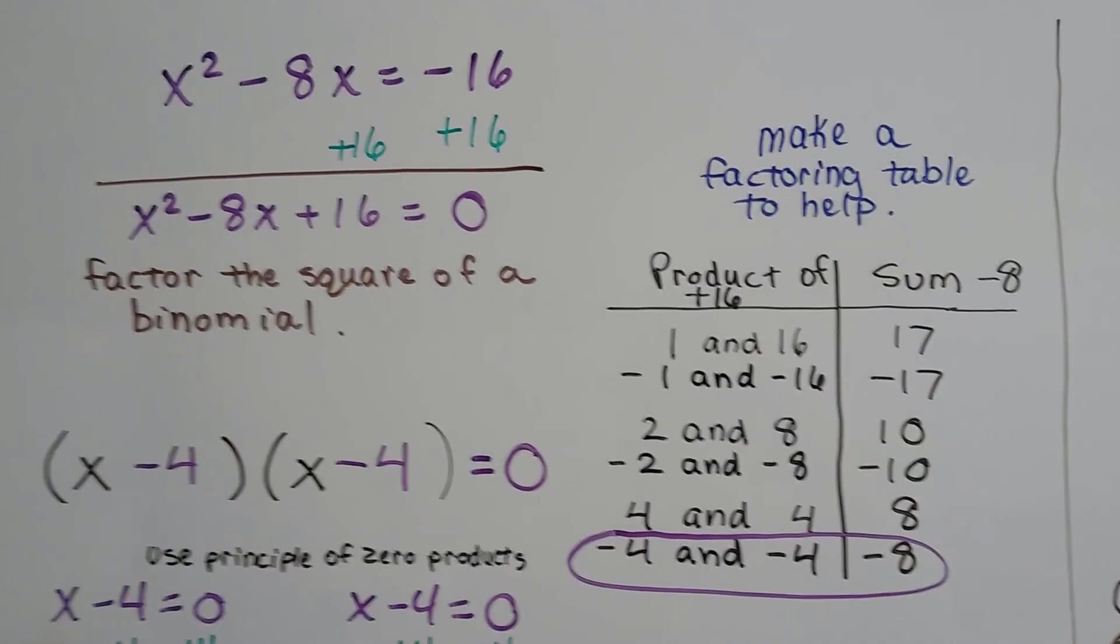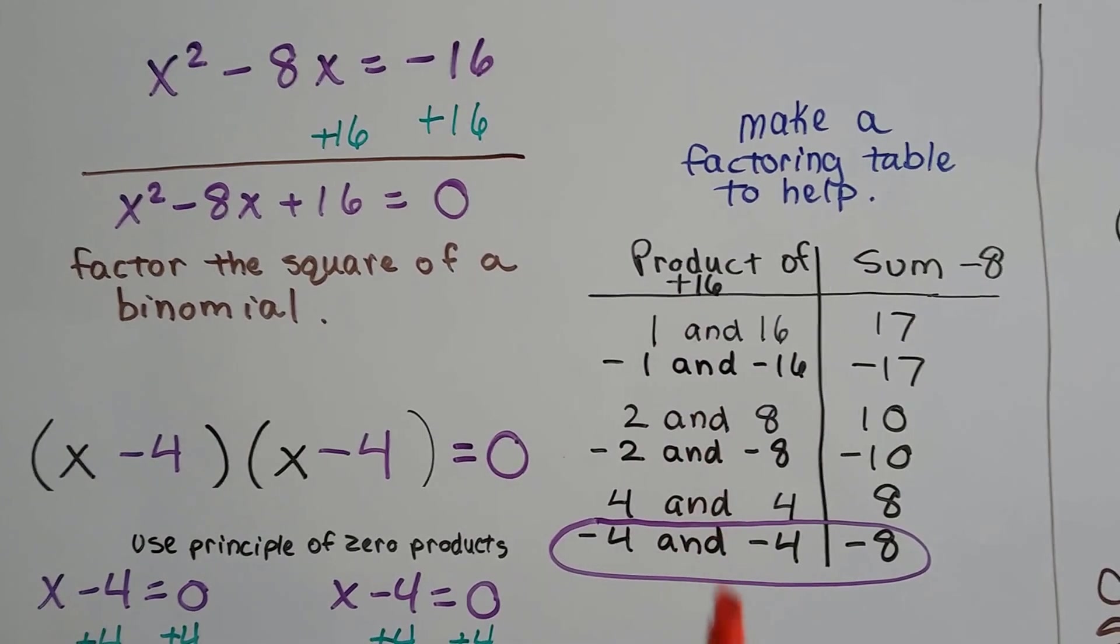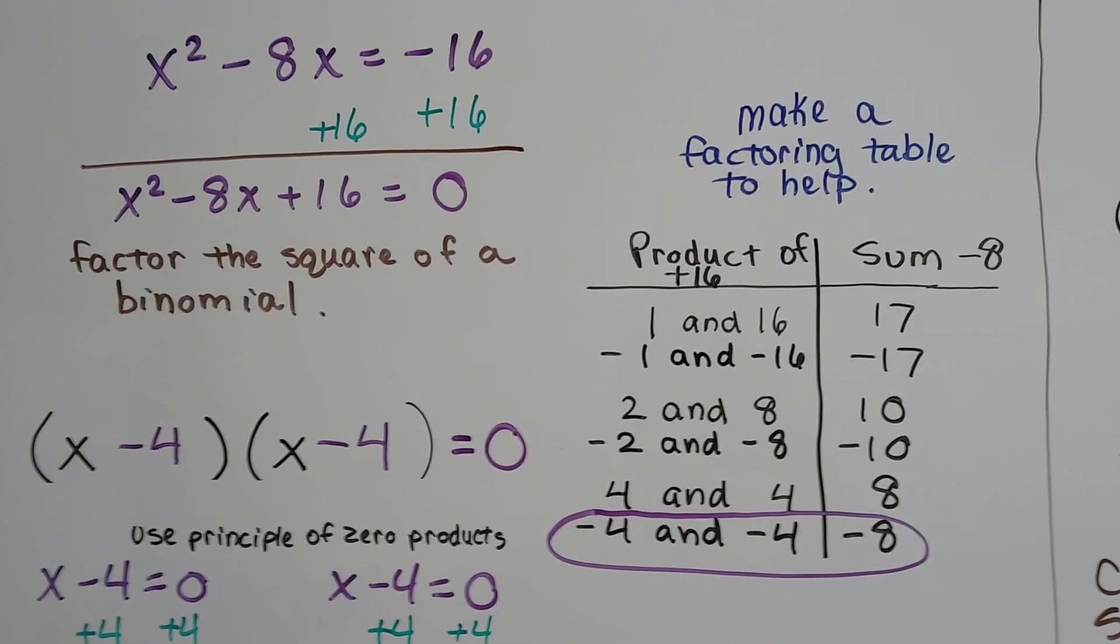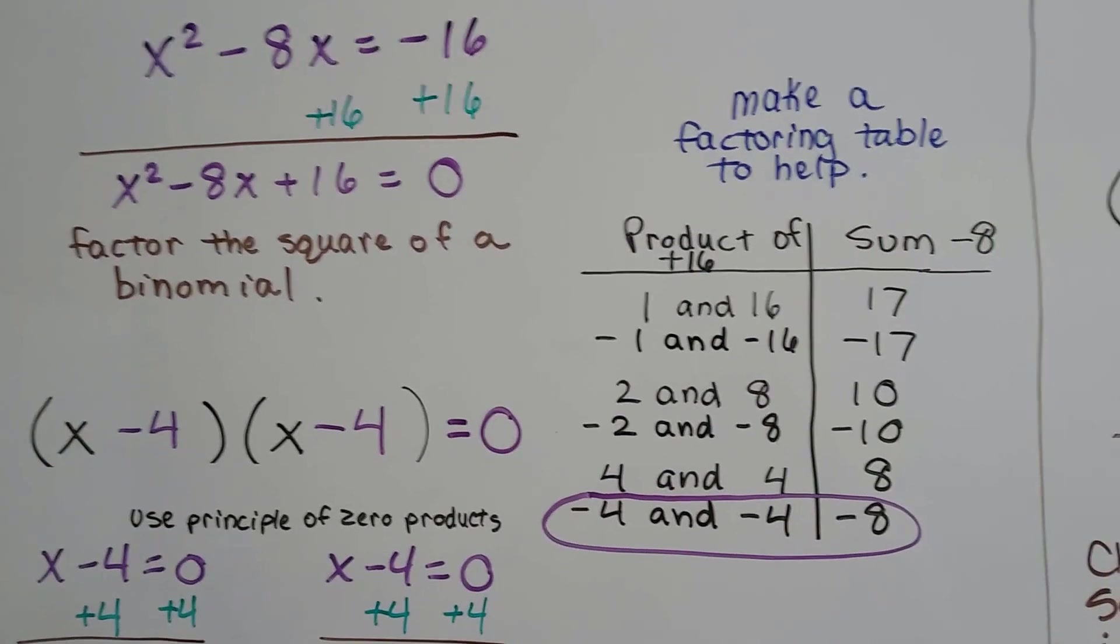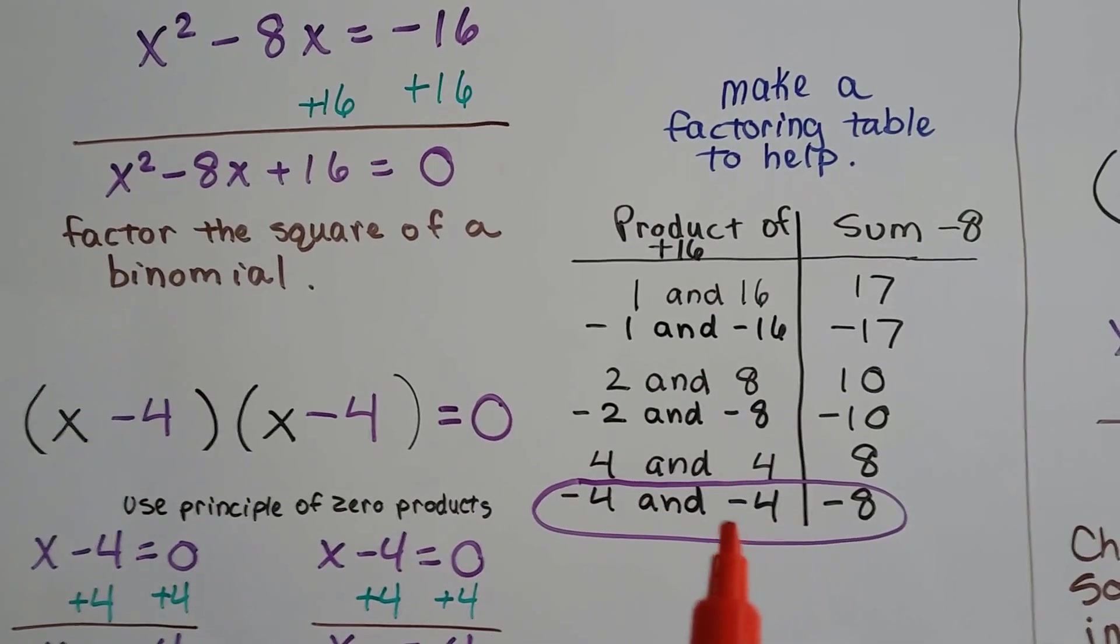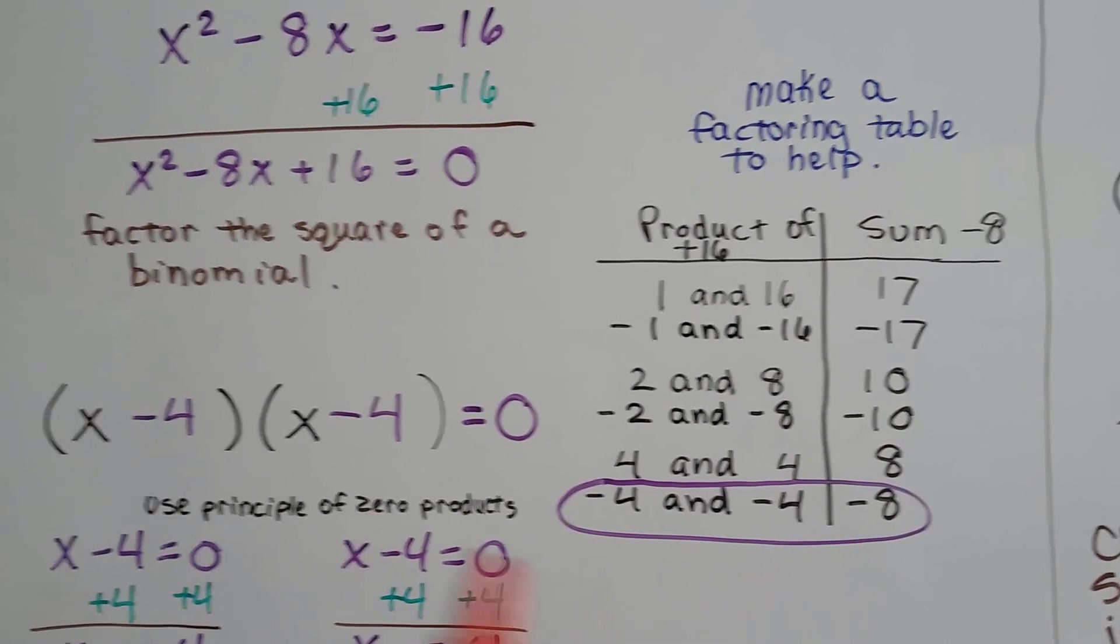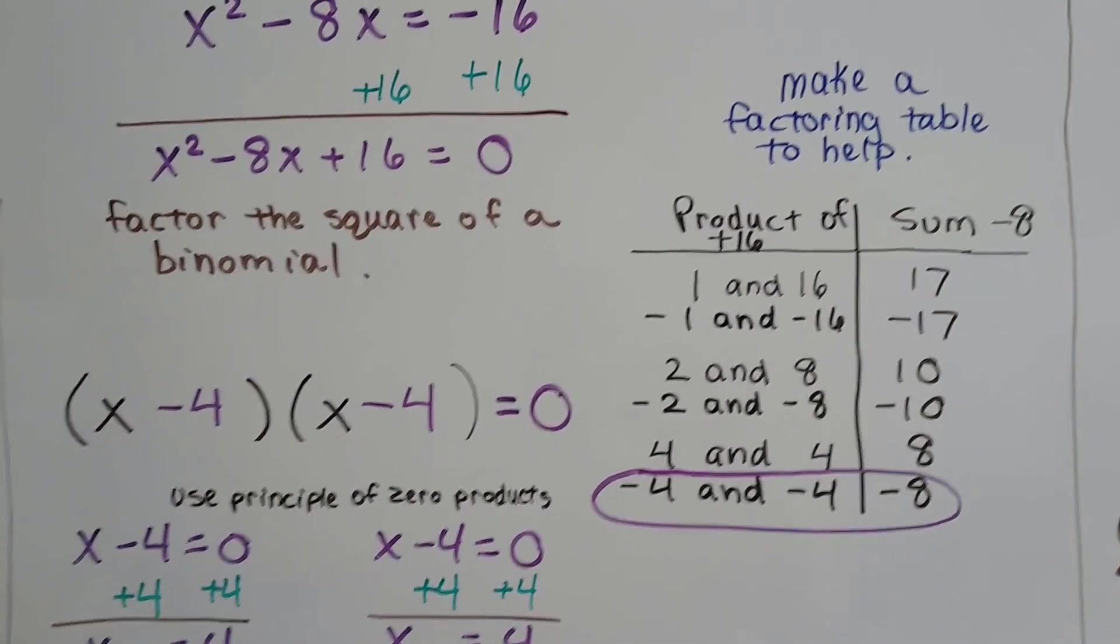So we can make a factoring table to help us, and we list all the products that would make a positive 16, but they have to make a sum of negative 8. And when we get to negative 4 times negative 4, which is a positive 16, and the sum is negative 8, we know we found the right one, and we just put them into the parentheses.